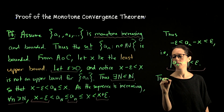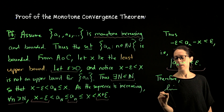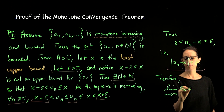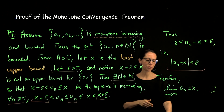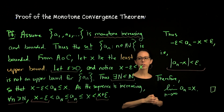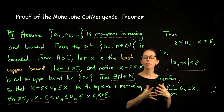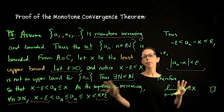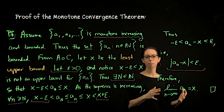That is the definition of sequential convergence, telling us that the limit of this sequence is x. Therefore this sequence converges, and we can say what the limit is — it's the least upper bound. That concludes our proof of the monotone convergence theorem for the increasing case. For a decreasing sequence you would follow a similar process but look at the greatest lower bound.